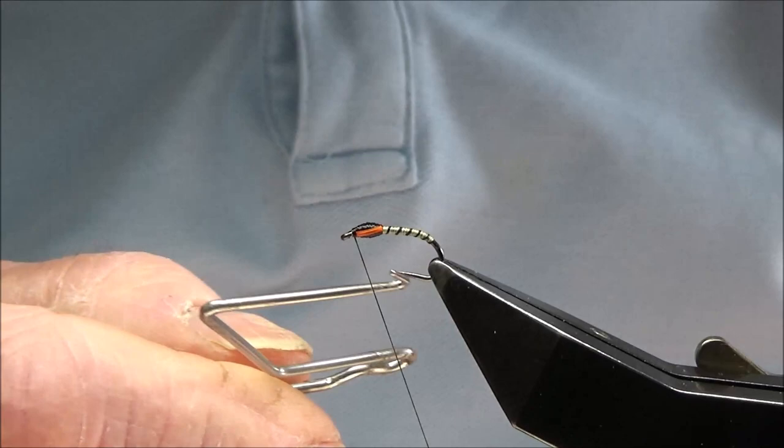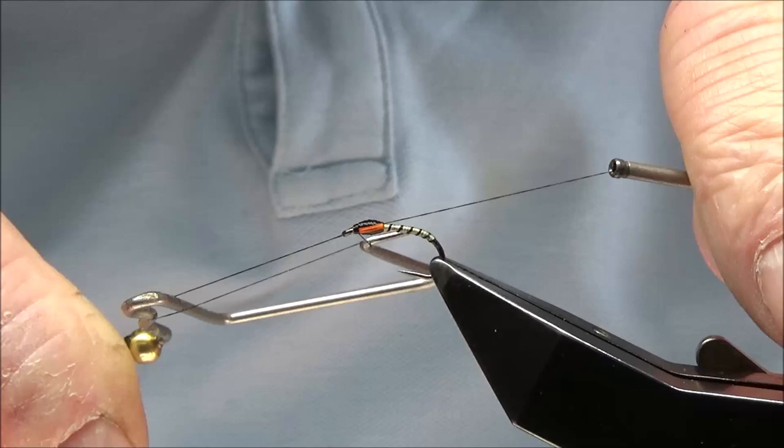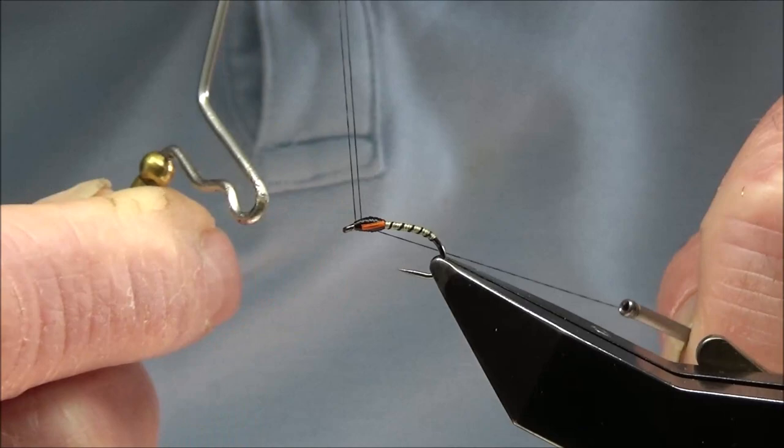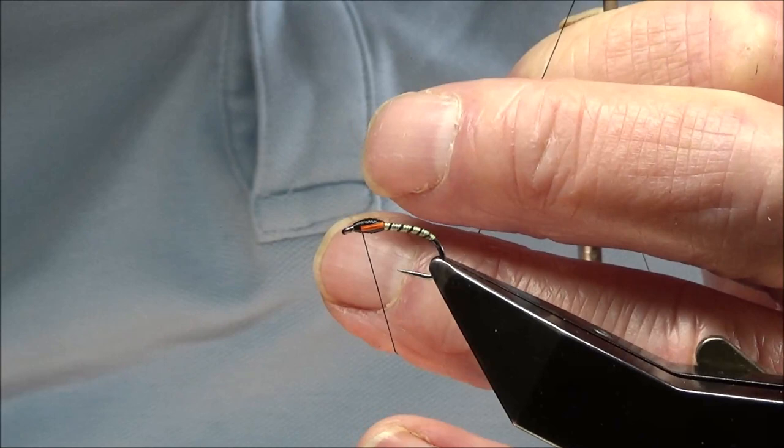Start at the eye and come back four turns, so you're making sure you're covering the biot. Cut the thread off.